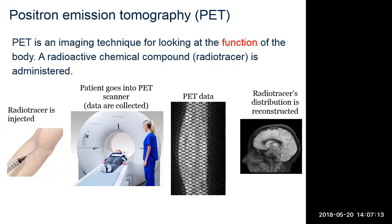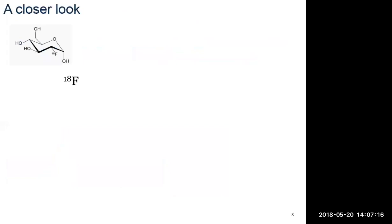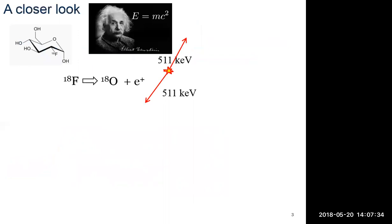A closer look at the case of fluorodeoxyglucose labelled with fluorine-18, which is a positron emitter — it's fluorine-18, not fluorine-19, and that's unstable. F-18 converts to oxygen-18 plus emission of a positron, and the positron is the antiparticle of the electron. When matter and antimatter meet, we get complete annihilation and conversion of mass to energy according to E=mc². That's why we arrive at two photons of 511 keV that are approximately back-to-back.